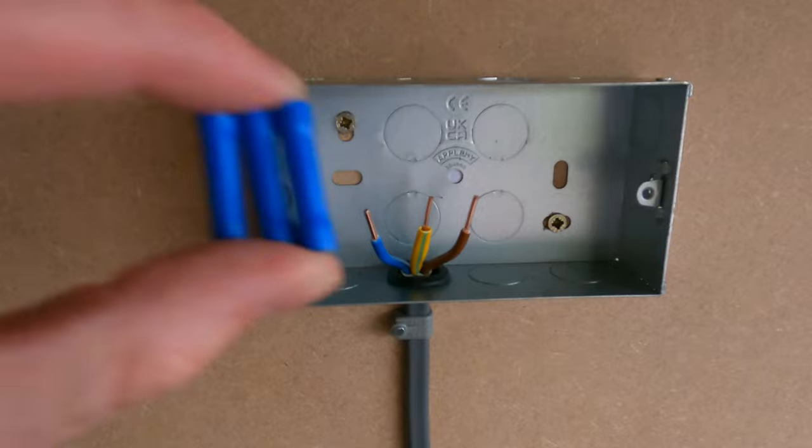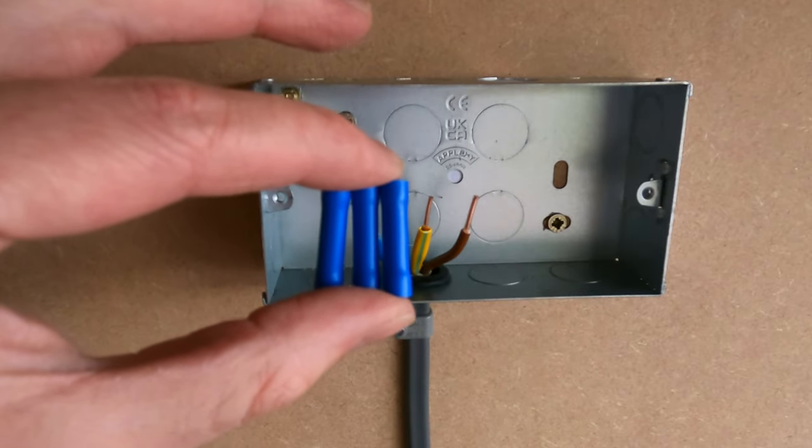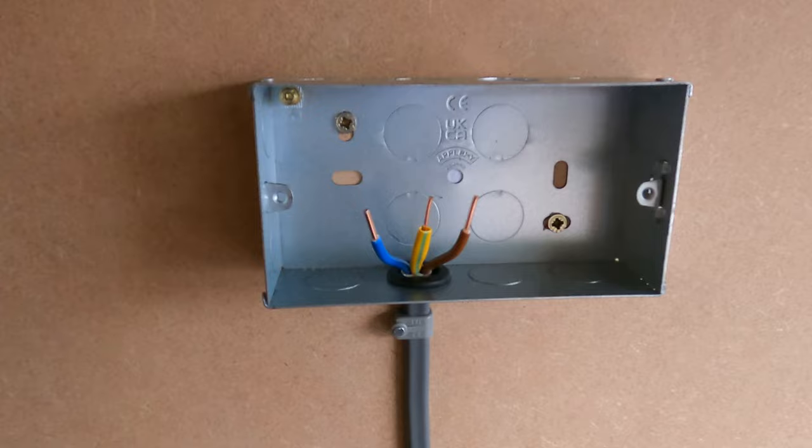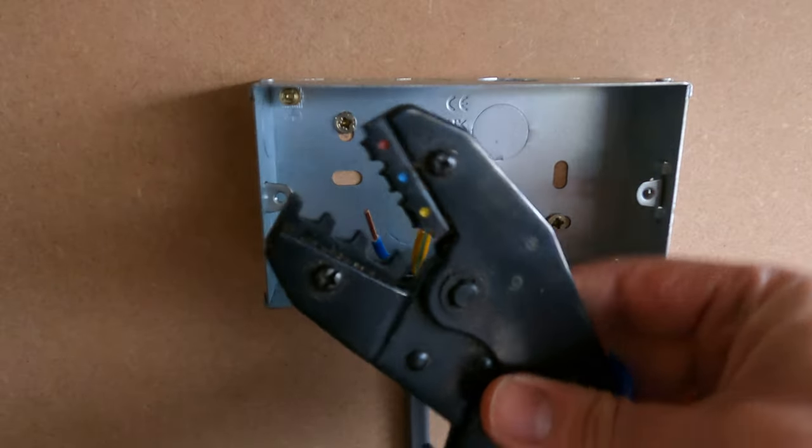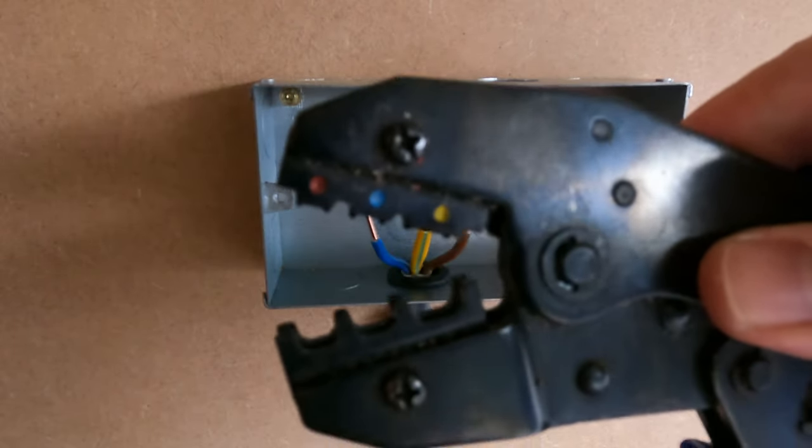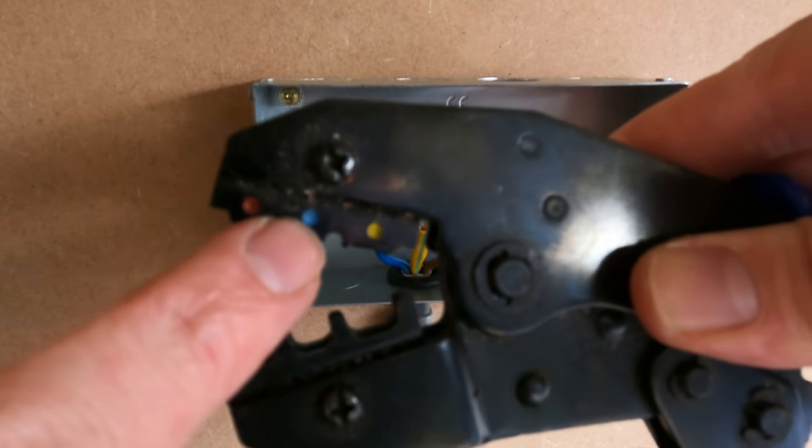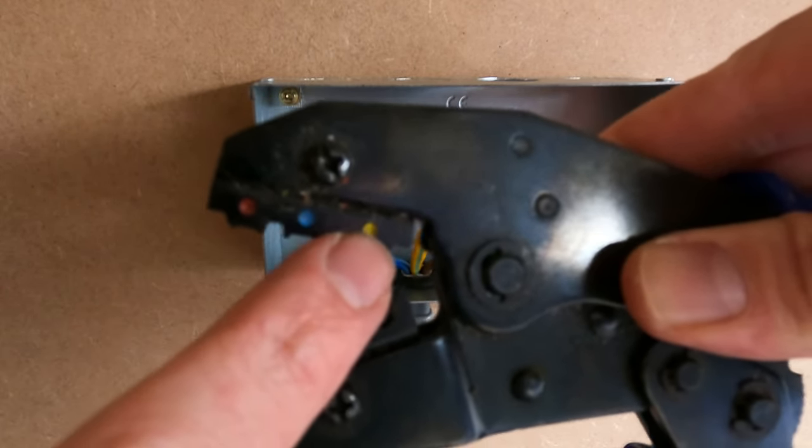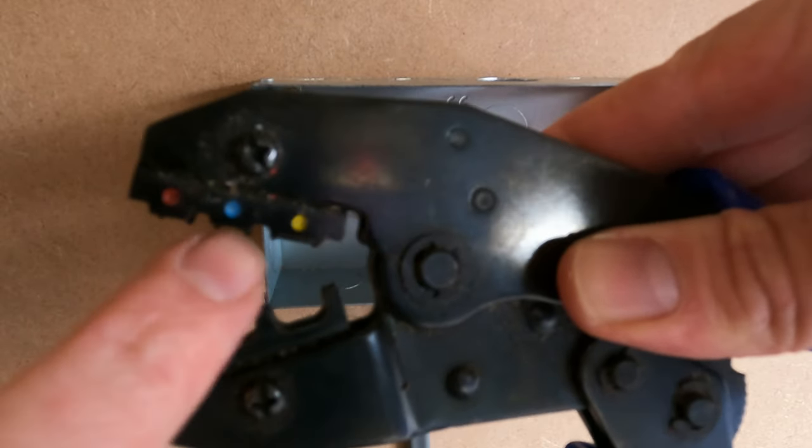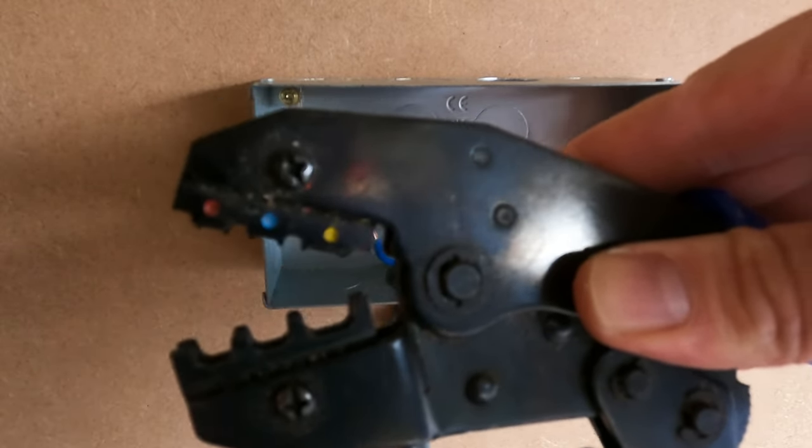So you get various size crimps, we're going to be using the 2.5 mil crimps for the 2.5 mil cable. Then you want to grab your crimping tool. So you've got various different slots here, the red one is for the smaller cables, the blue one for the cable we'll be doing, a 2.5, and a yellow for the larger size cables. And like I say, we'll be using the blue slot today.